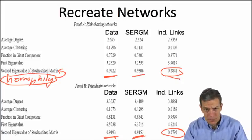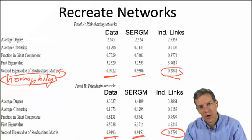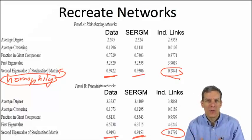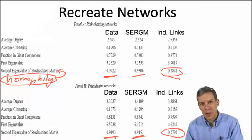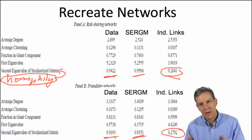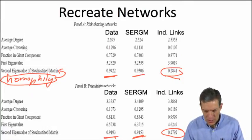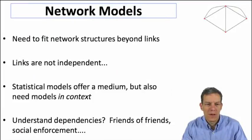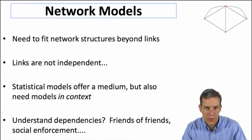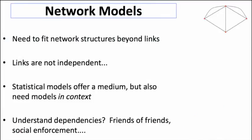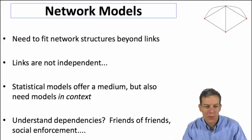This shows that richer models — where you allow for subgraph structures to be constructed and explicitly measured — recreate aspects of networks beyond what they're directly estimating, in ways that independent link models miss. We need to fit network structures beyond links in order to match what we observe in reality, capturing the fact that links are not independent. These statistical models offer a means for doing that.